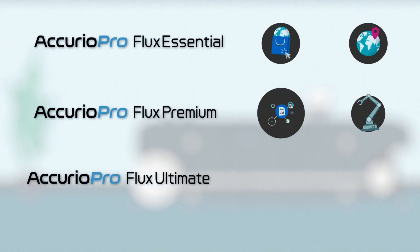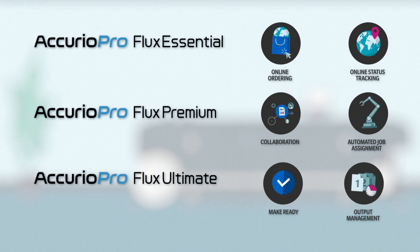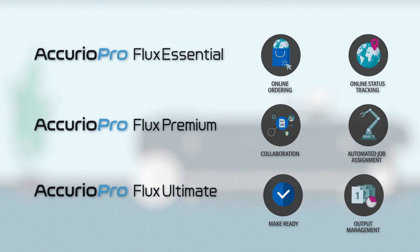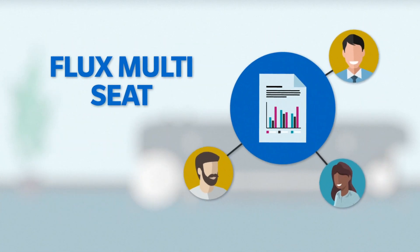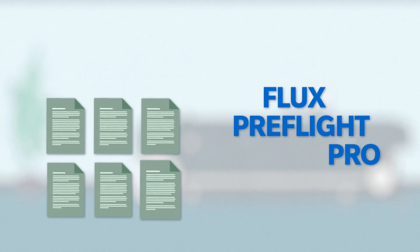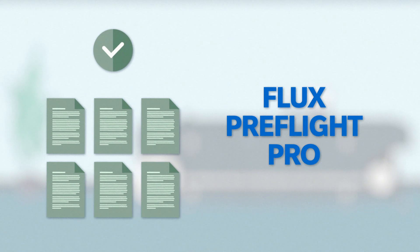You can get Flux Label Impose as an option for Curio Pro Flux, but Konica Minolta's software solution for professional print automation offers much more. For instance, Flux Multi-Seat for simultaneous teamwork on the same job, or Flux Pre-Flight Pro for easy problem-fixing to rule out production errors.